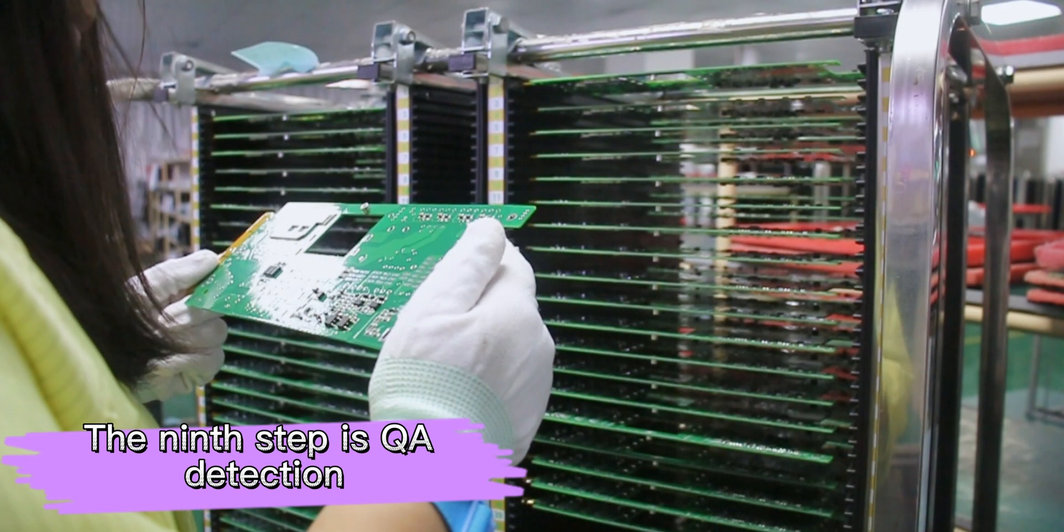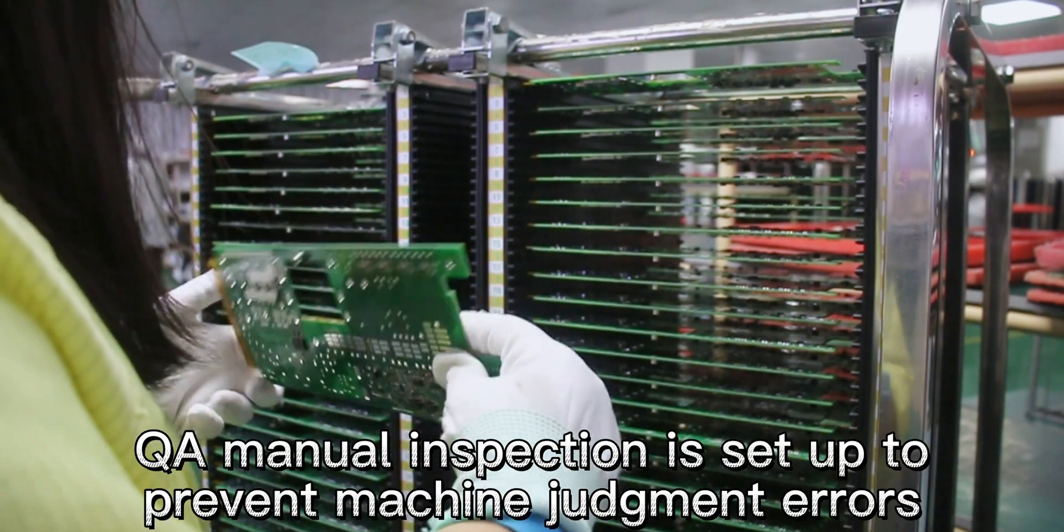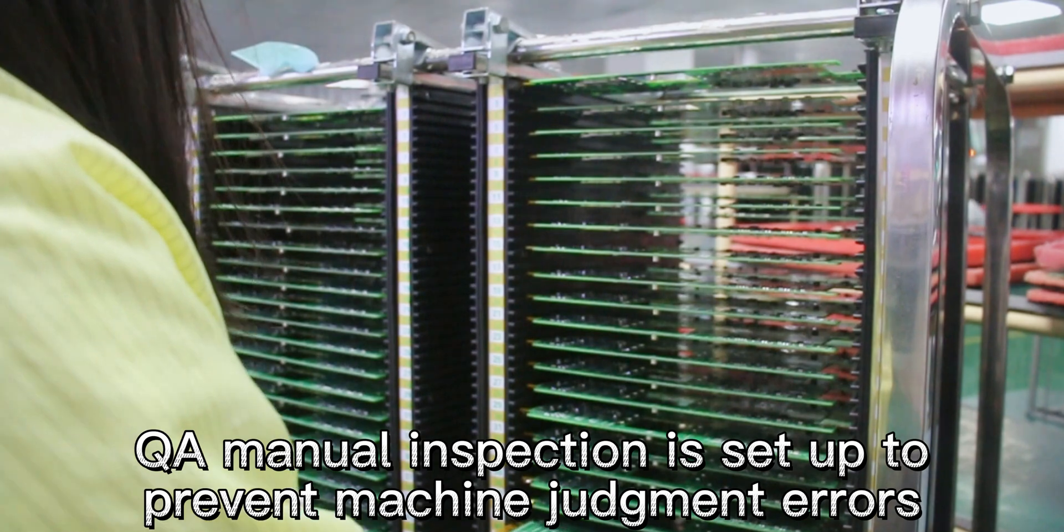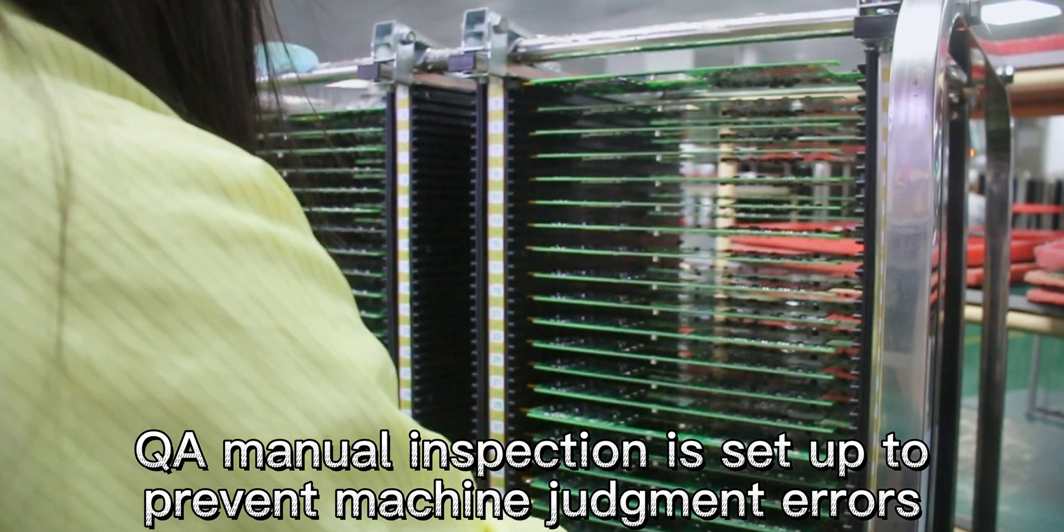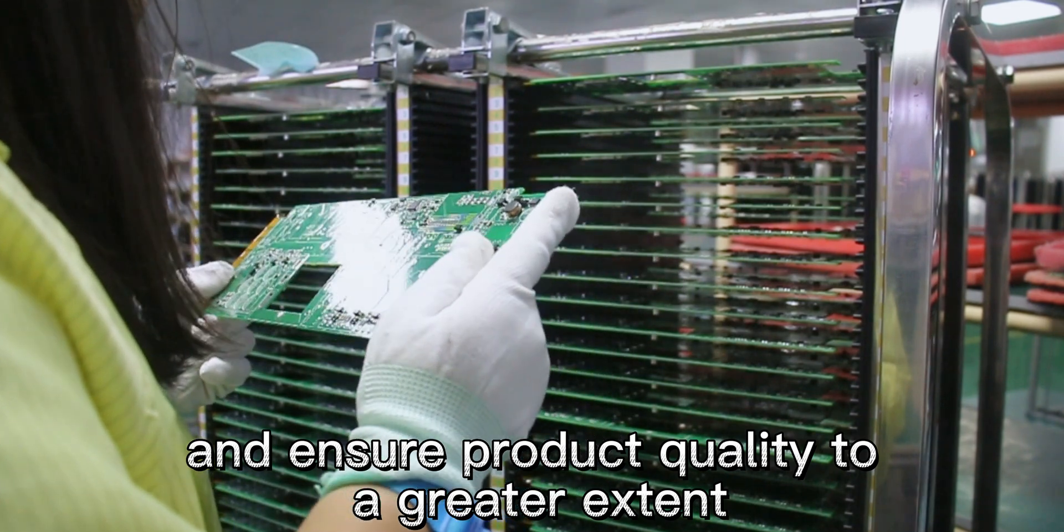The ninth step is QA detection. In the end, QA manual inspection is set up to prevent machine judgment errors and ensure product quality to a greater extent.